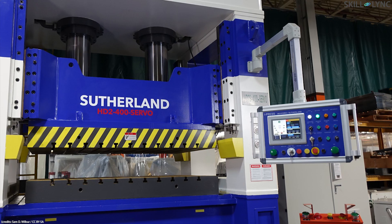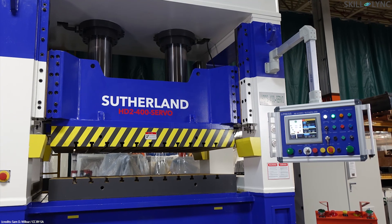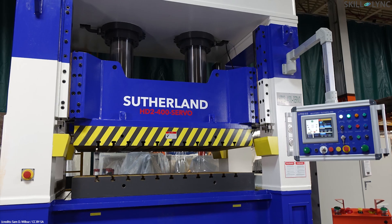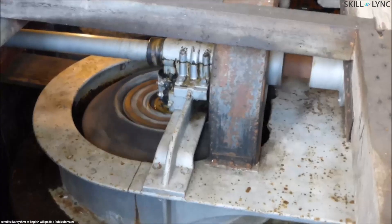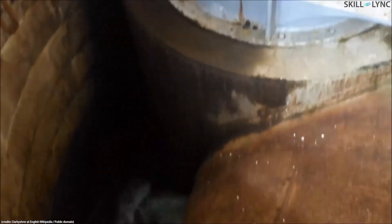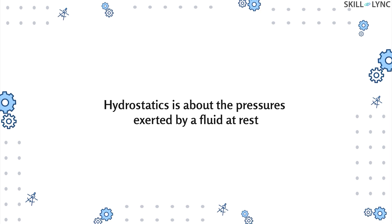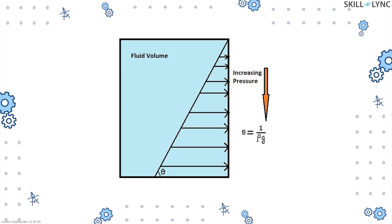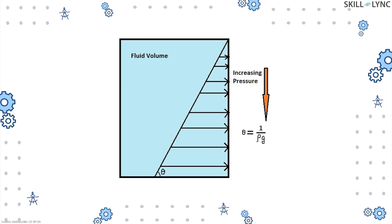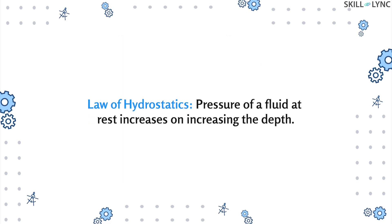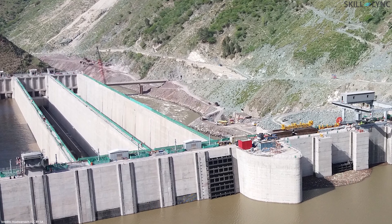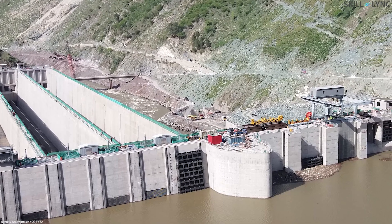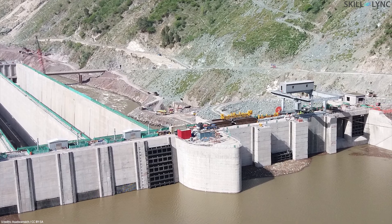In general, fluid power systems may or may not have a confined enclosure. Fluids can either be at rest when confined in a system, such as in a hydraulic press, or they can be moving, as in a hydraulic turbine. A certain branch of science called hydrostatics deals with fluids at rest or in a static state. On Earth, all fluids are subjected to the force of gravity, and due to this, the pressure increases as the depth of the fluid increases. This is called the law of hydrostatics.